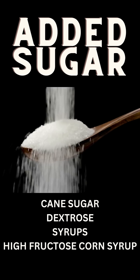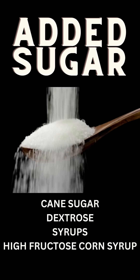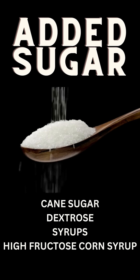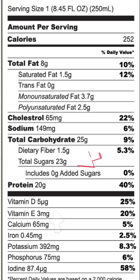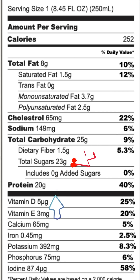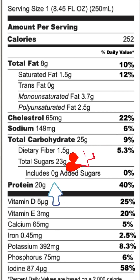These ingredients include cane sugar, high fructose corn syrup, syrups, and more. One carton of EO3 has 23 grams of natural fruit sugar, but zero added sugar.